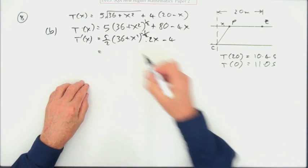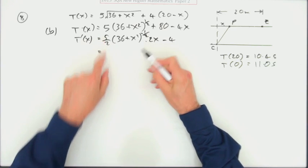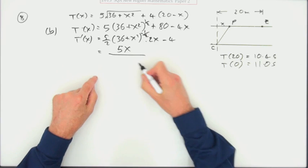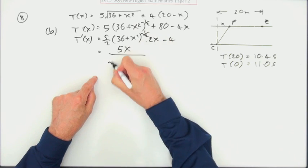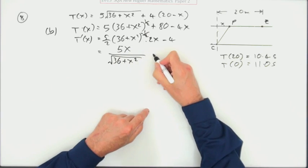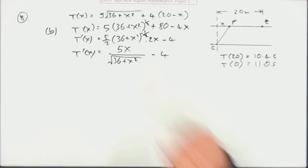If it isn't just an x inside, then multiply by the derivative of that, and the derivative of 36 plus x squared is 2x. Plus that'll be 0, minus that'll be 4 for this part. I'll just tidy this up. The 2's will cancel leaving you 5x. That negative means it should be underneath, and that half means it's a square root. So root 36 plus x squared minus 4.